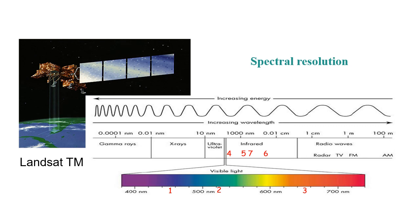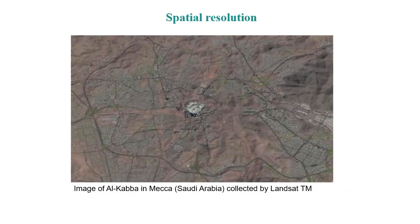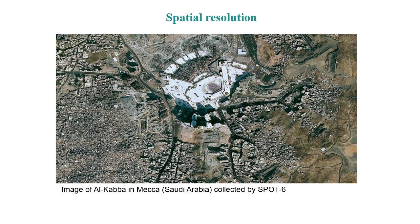Another important characteristic of sensors is their spatial resolution — that is, the pixel size of the images the sensors take. For example, with Landsat TM, the spatial resolution is not very detailed; we can only distinguish some roads and tell that this area — Mecca in Saudi Arabia — is urban. Another image of the same area taken by a different sensor, SPOT-6, is much more detailed: we can identify individual buildings and even people in the Al-Kaaba sanctuary.